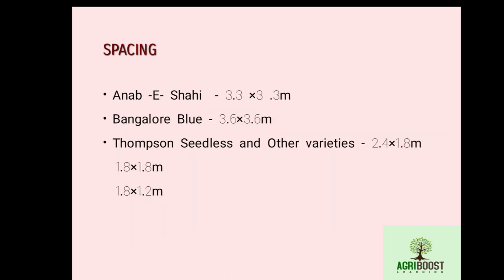Spacing varies from one variety to another. In Anab-e-Shahi variety, spacing is 3.3 × 3.3 meters. In Bangalore Blue variety, spacing is 3.6 × 3.6 meters. For Thompson Seedless and other varieties, spacing is 2.4 × 1.8 meters or 1.8 × 1.8 meters or 1.8 × 1.2 meters.